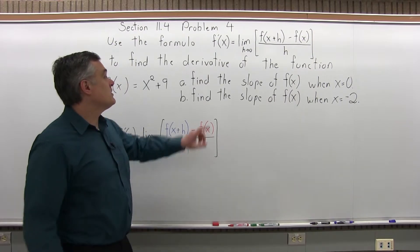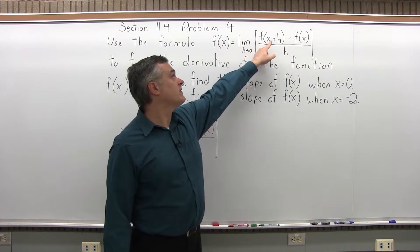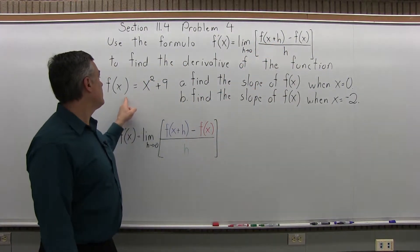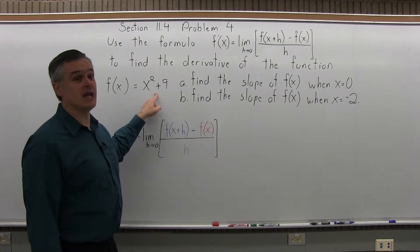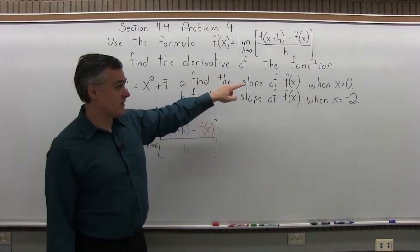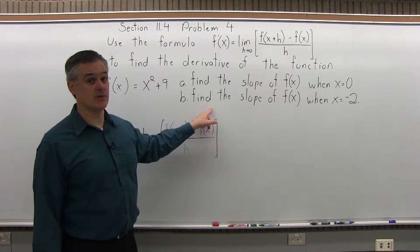It says use the formula f'(x) equals the limit as h approaches 0 of f(x+h) minus f(x) over h to find the derivative of the function f(x) = x² + 9. Once you have the derivative, find the slope of f(x) when x is 0, and find the slope of f(x) when x is -2.